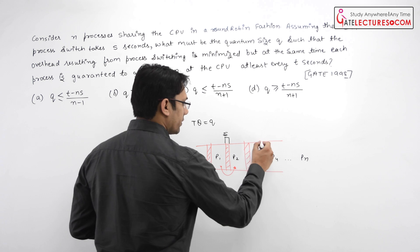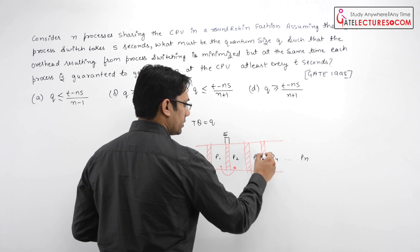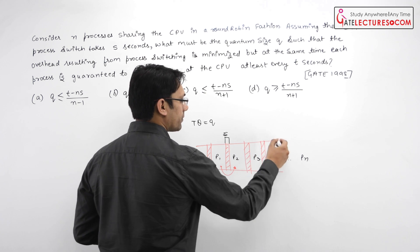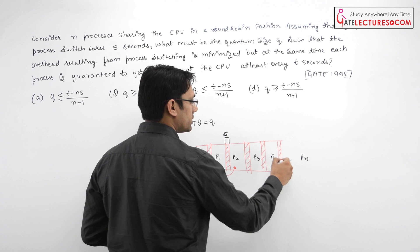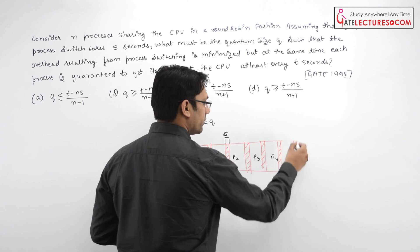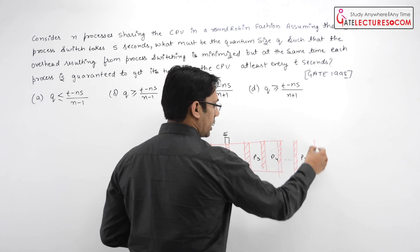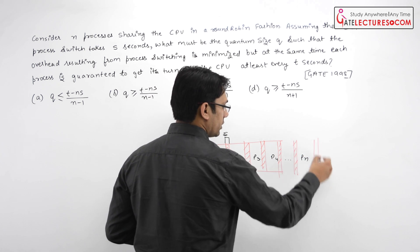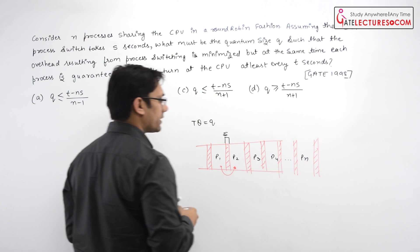Between process P2 and P3 it will take a process switch, here it will take a process switch, and here it will take a process switch. And again after every T seconds a process should get its turn.